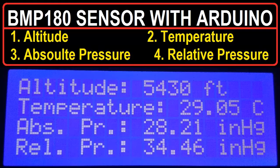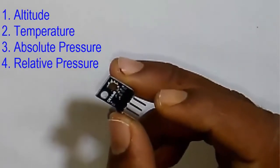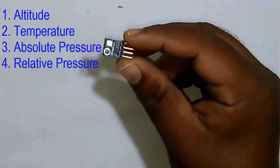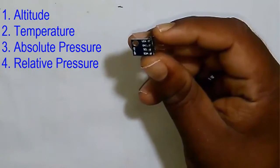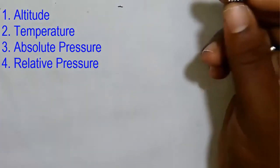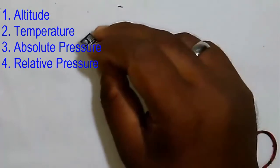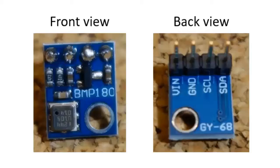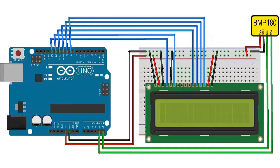Welcome. In this video we will interface the BMP180 sensor to measure altitude, temperature, absolute pressure, and relative pressure. This is the BMP180 barometric sensor — it has four pins: VCC, ground, SCL, and SDA. We will be interfacing it with Arduino. It comes in a very small size but with very high accuracy and precision. It is also known as the GY-68 sensor.